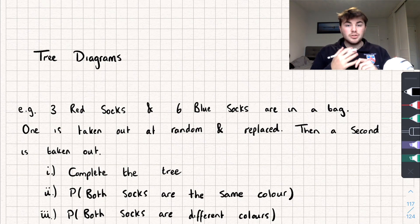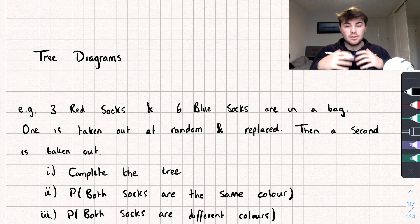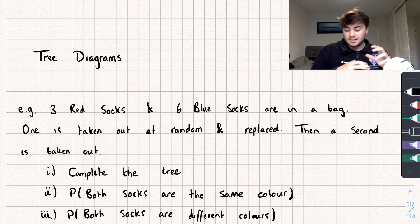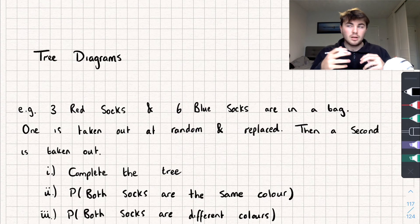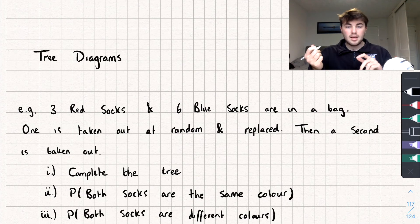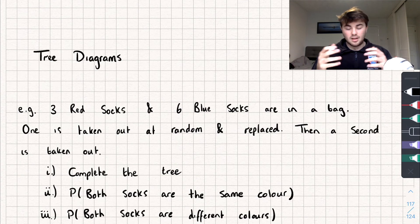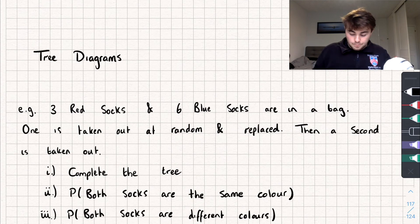In this video I'm going to teach you how to use a tree diagram to calculate the probability of an event. We usually use a tree diagram when we've got a combination of events happening. In an exam, a typical question might be something like: Jack takes a counter out of a bag, replaces it and picks out another counter — what's the probability both counters were red?